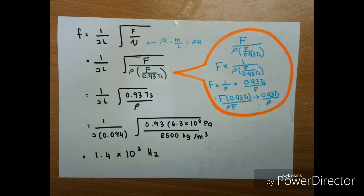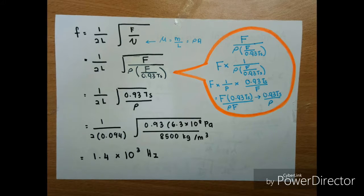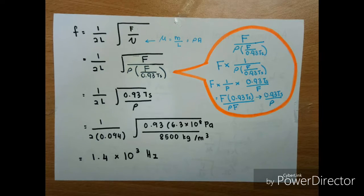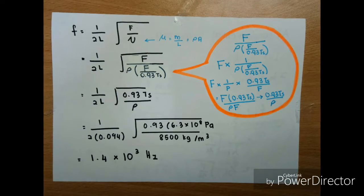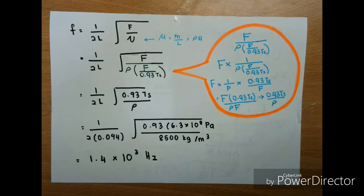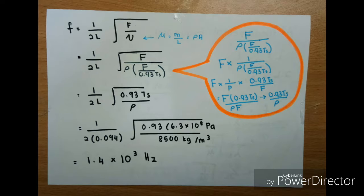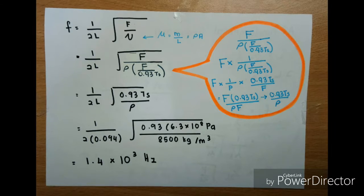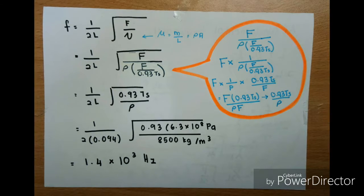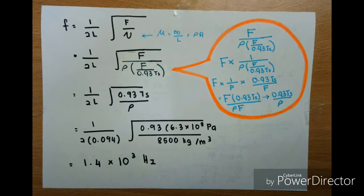We proceed to the next step. We have kept the values that are needed to find the frequency from the calculation before. Using the values, we can substitute into the first equation, which is 1 over 2L square root F over mu. We can derive the equation as shown in the bubble.